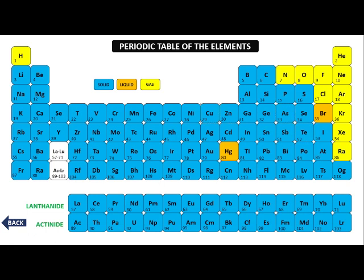This page contains 118 elements serially arranged in this modern periodic table. If you want to know about an element, we have to click on that element.